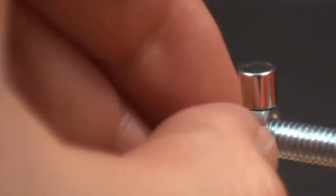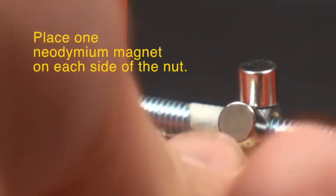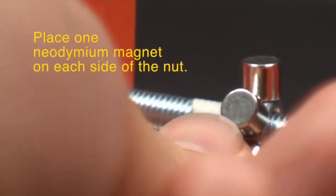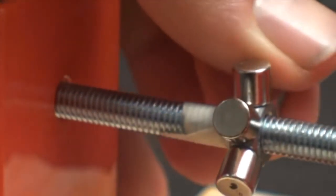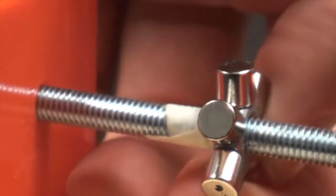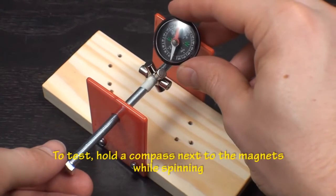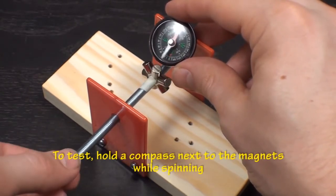Place one neodymium magnet on each side of the centered nut. Make sure to place the magnets alternating north and south. You can test to see if they alternate by spinning the bolt with a compass next to the magnets.